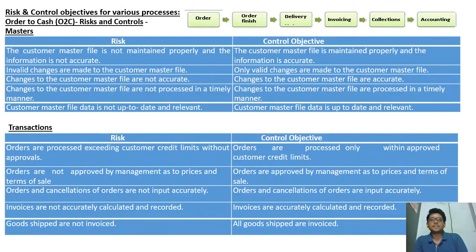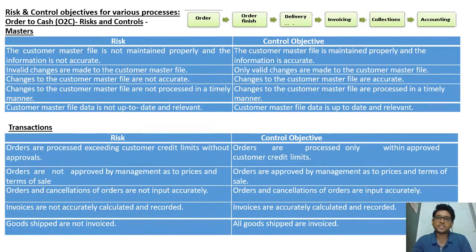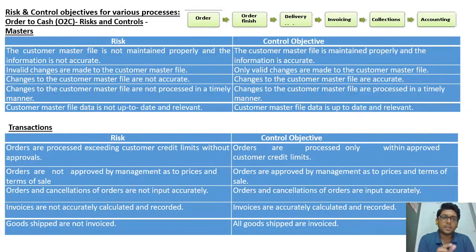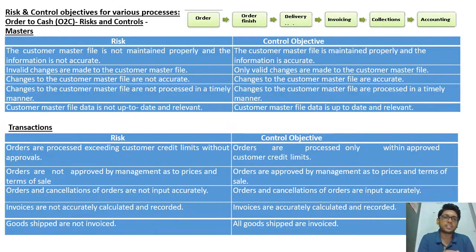For O2C (Order to Cash), the process covers order, delivery, invoicing, collections, and accounting. Under O2C masters, the risks and control objectives are: customer master file not maintained properly — control objective: should be maintained properly and accurately; invalid changes made to customer master file — only valid changes to be made; changes to customer master file not accurate — changes must be accurate.